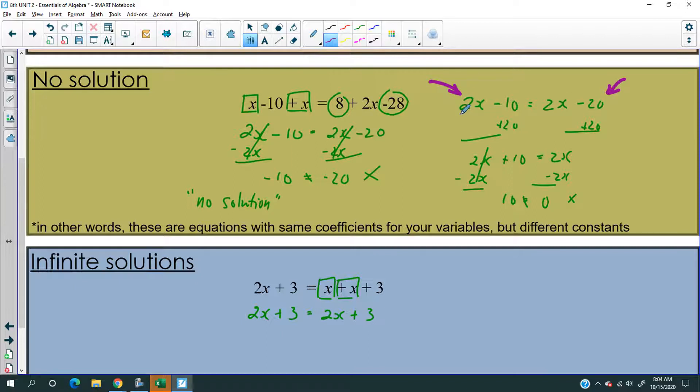Examine this equation. The coefficient and the variable is the same, but the constants are not. Notice that. That's negative 10, that's negative 20. Here, both expressions actually are exactly the same. So here's the question. Like, what am I supposed to write for that?